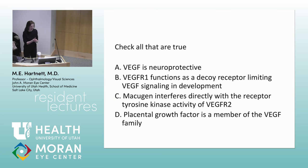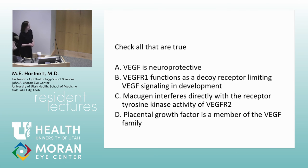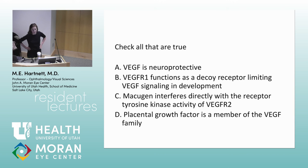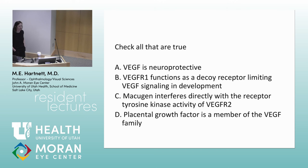Aflibercept (ILEA) is a VEGF trap — a fusion protein between a domain from VEGF receptor 1 and VEGF receptor 2. It captures both VEGF-A and placental growth factor, which is why it's thought to be more potent. There's evidence that placental growth factor may be more relevant in polypoidal conditions, so some prefer ILEA for polypoidal vasculopathy. Macugen doesn't directly interfere with the receptor tyrosine kinase activity of VEGF receptor 2 — that may be why it was less effective. Placental growth factor is a member of the VEGF family — true.